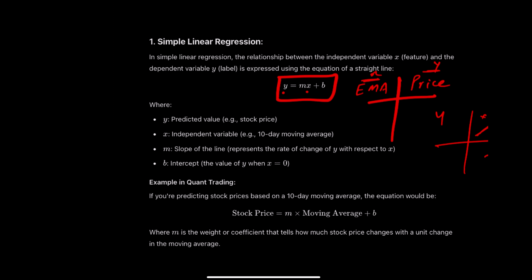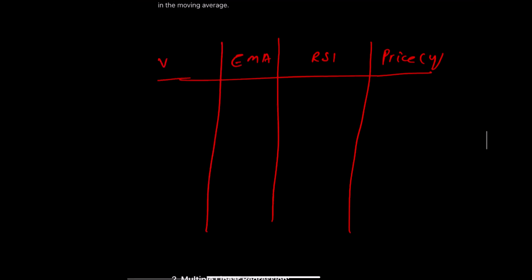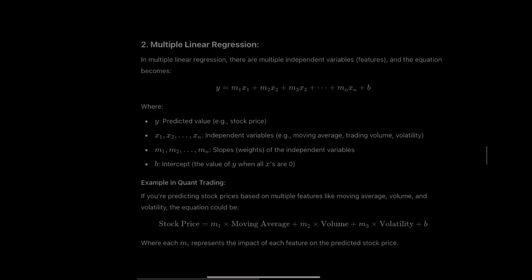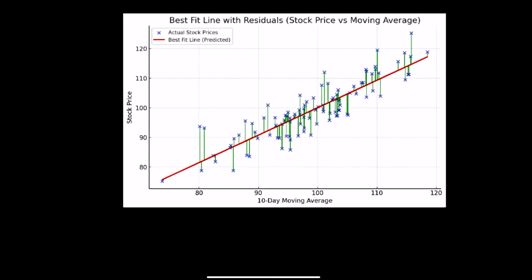In simple linear regression we have only one feature, but in real life we have multiple features. To predict the price y, we can use RSI (x1), EMA (x2), and VWAP (x3). This gives us three features or inputs and one output, also known as the label. This is the equation for multiple linear regression.